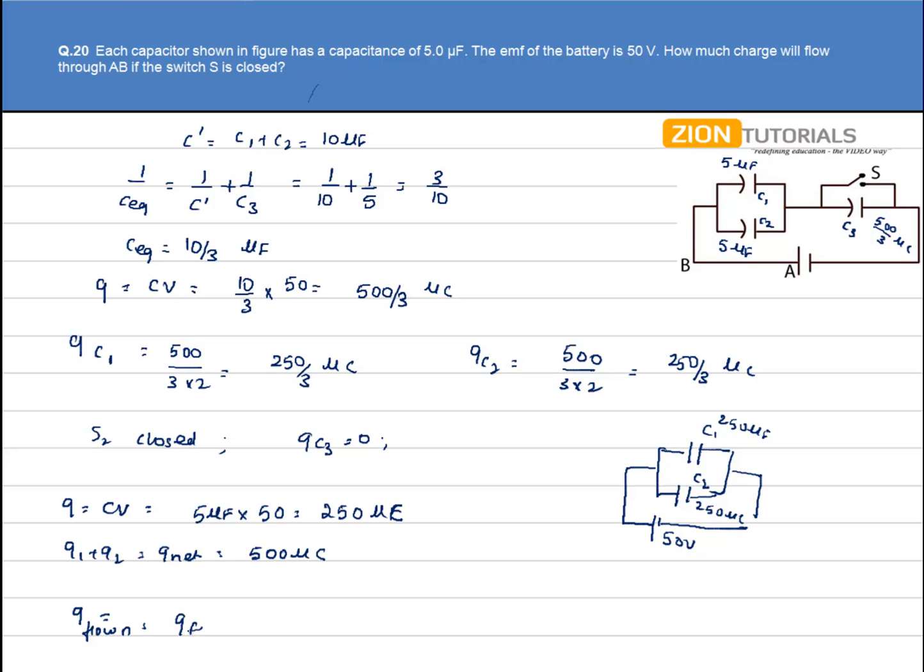That can be given by Q final minus Q initial that is 500 minus 500 by 3. So solving gives 3.33 into 10 to the power minus 4 coulomb that is the answer.